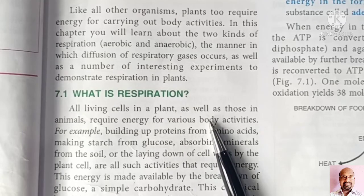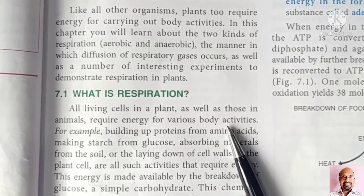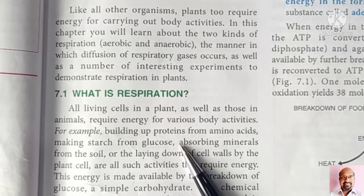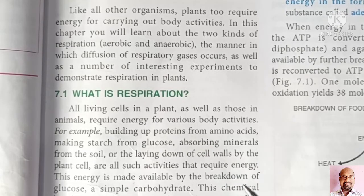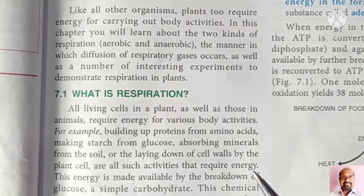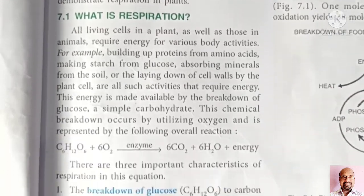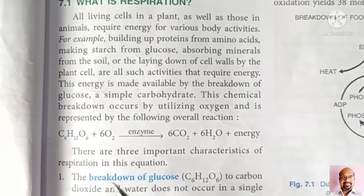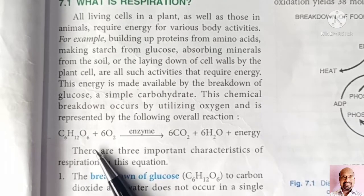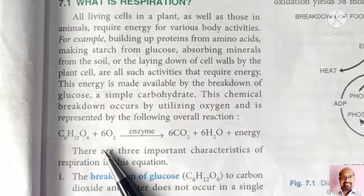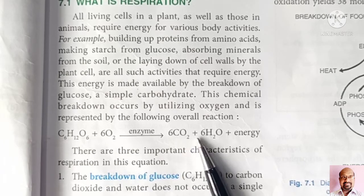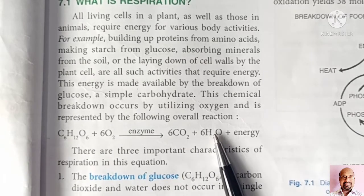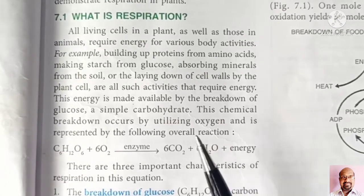As we all know, all living cells in plants as well as animals require energy for various body activities. This energy is made available by the breakdown of glucose. This process is known as respiration. Respiration is the process of breaking down glucose to liberate energy. As a by-product, it gives carbon dioxide and water. In other words, we can say respiration is the process of oxidation of food.